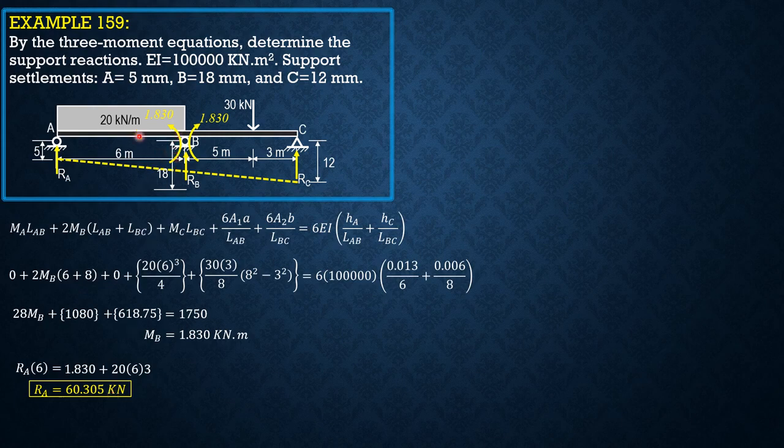And then imagine RB left is upward, so summation of moments about A equals 0: RB left × 6 + 1.83 = 20 × 6 × 3.